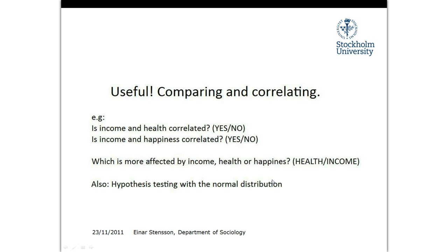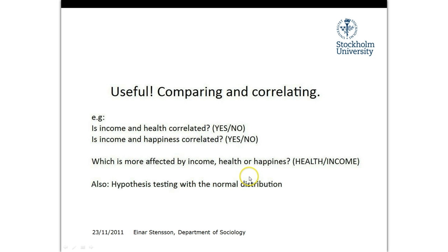So how is this useful? If we want to compare income and health — are they correlated? Do large incomes vary together with good health? Or does income correlate with happiness? We can see this if we standardize the variations and then compare them. We can even compare which is more affected by income: health or happiness. That's why this standardization is so useful, and most importantly it will be used in our hypothesis testing in future tutorials.